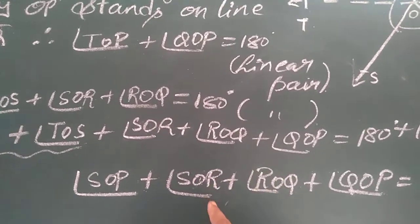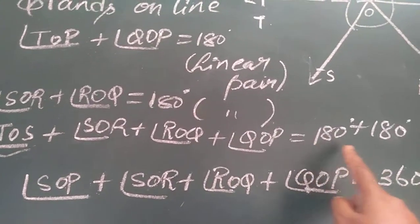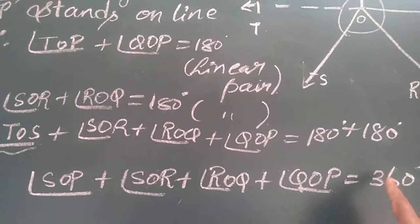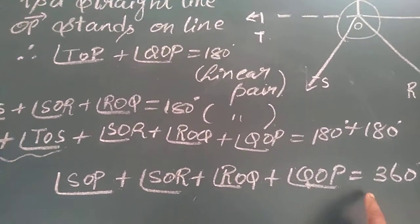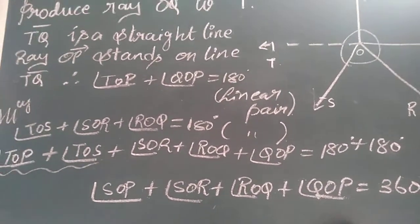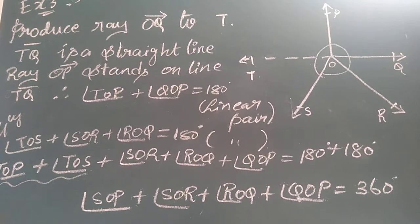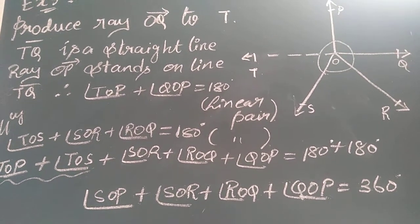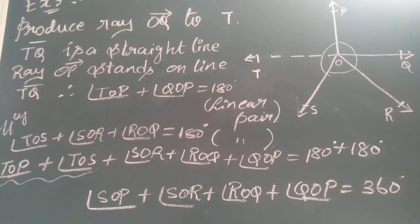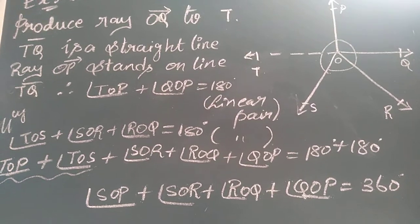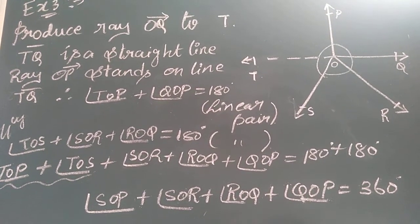The remaining angles are written as they are. Now 180 degrees plus 180 degrees gives 360 degrees — this is what we had to prove in our question. The same result was achieved by producing ray OQ up to T. Remember this method while solving in your exam.